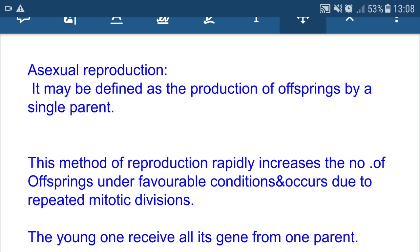Asexual reproduction rapidly increases the number of offspring under favorable conditions, occurring through repeated mitotic division. Mitotic division is a type of cell division. Cell division can be classified as two types: mitotic division (mitosis) and meiotic division (meiosis). In mitotic division, cell number increases and chromosome number remains the same as the parent cell — so it is known as equational division. In meiotic division, which takes place only during the formation of gametes, the chromosome number is reduced to half — so it is known as reduction division.